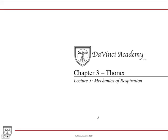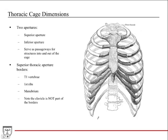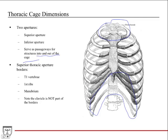This is the third lecture for Chapter 3, and in this chapter we're going to talk about the mechanics of respiration. First, let's talk about the dimensions of the thoracic cage. There are two apertures: the superior aperture and the inferior aperture. These are openings in the thoracic cage that serve as passageways for structures into and out of the cage — the superior for structures coming in and out of the neck into the thorax, and the inferior for structures coming from the abdomen.